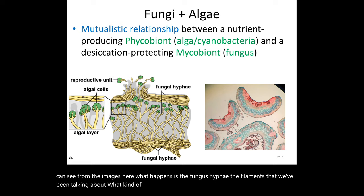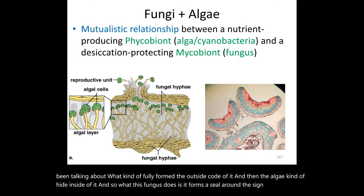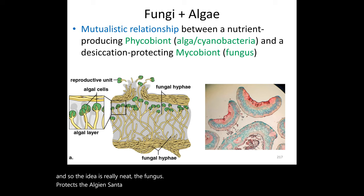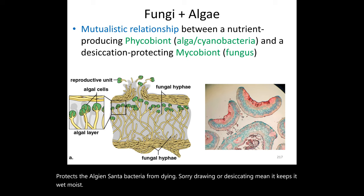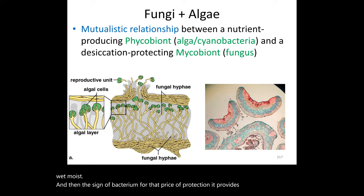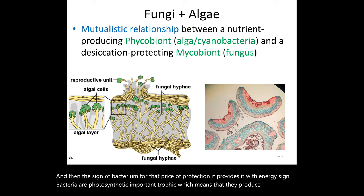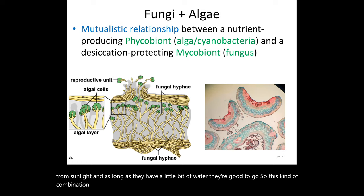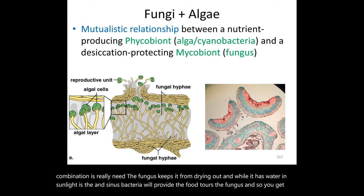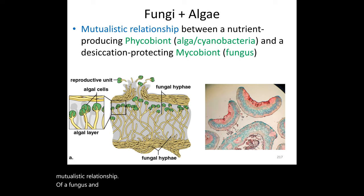In a lichen, the fungal hyphae form the outer protective coat around the cyanobacteria or algae, which shelter inside. The fungus protects the algae from desiccation — keeping it moist — while the cyanobacteria, being photosynthetic and phototrophic, produce energy from sunlight and water in return. It's a true mutualistic relationship: the fungus provides moisture protection, and the alga provides food. Cross-sections of lichens will be shown in lab.